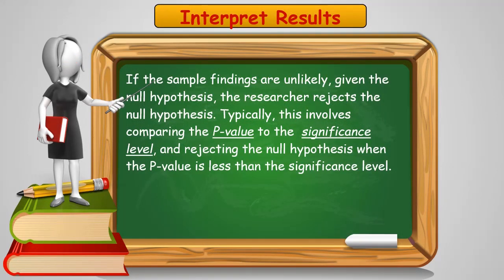To interpret the results, if the sample findings are unlikely to have occurred, then we would reject the null hypothesis. Typically, that's simply comparing the p-value to a significance level that we established before the test began.